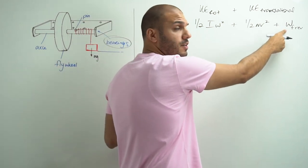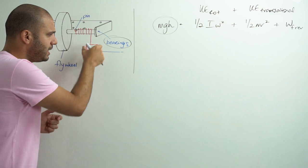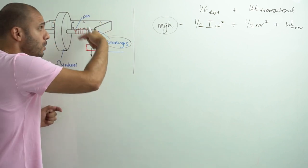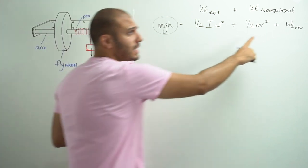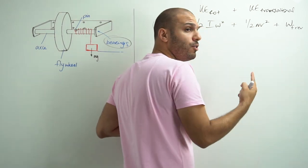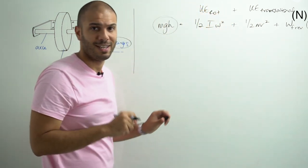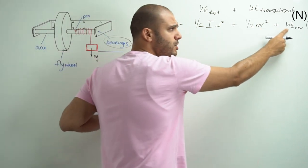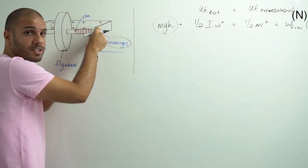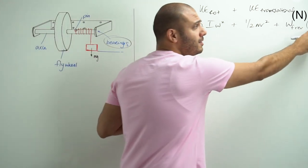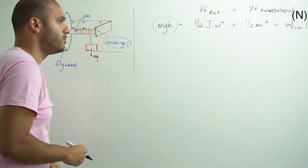This is the amount of work done per revolution. For example, if the string is wrapped 10 times around the axle, while the mass falls downwards it's going to spin and accelerate the axle through 10 turns. That means the work done per revolution must be multiplied by the number of turns, which I am denoting by capital N. So if there's one joule per revolution lost due to friction, we multiply that by N to get the full work done to overcome friction.